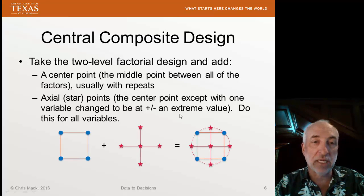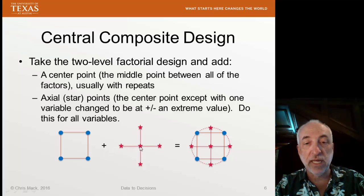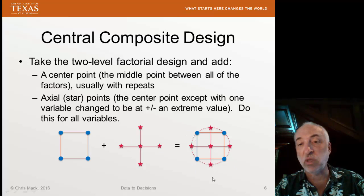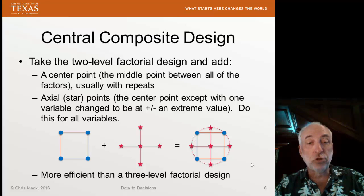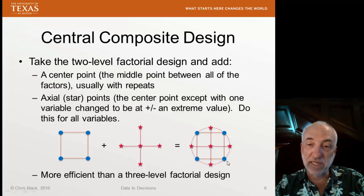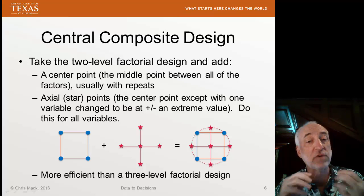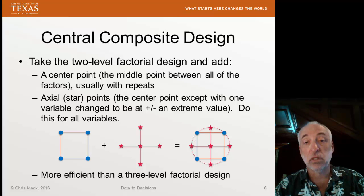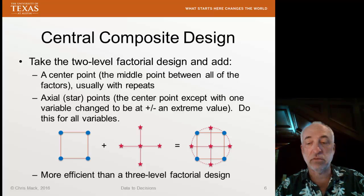Here's an example with just two variables. I've got my two-level factorial design with x1 and x2. Then I collect a center point and four extreme points and combine them — these become all the data points collected in my design. If I have two factors, the number of data points is the same as a three-level factorial design. But if I have three or more factors, a three-level full factorial design will collect a lot more data points than a central composite design.